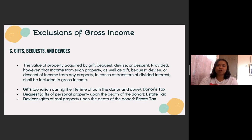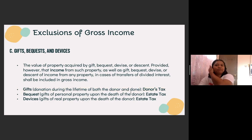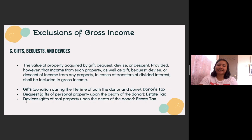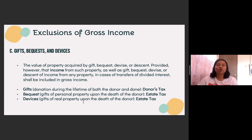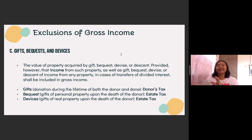When we say gifts, these are donations during the lifetime of both the donor and the donee. The taxability of gifts is under your donor's tax. When we say bequest or devises, the difference is: bequest is a gift of personal property, and devise is a gift of real property. Both are given upon the death of the donor, or they form part of an inheritance received by the heirs or beneficiaries. Their taxability falls under estate tax. Therefore, they will not be included in the gross income of the receiver because they are being paid by the donor himself or herself.